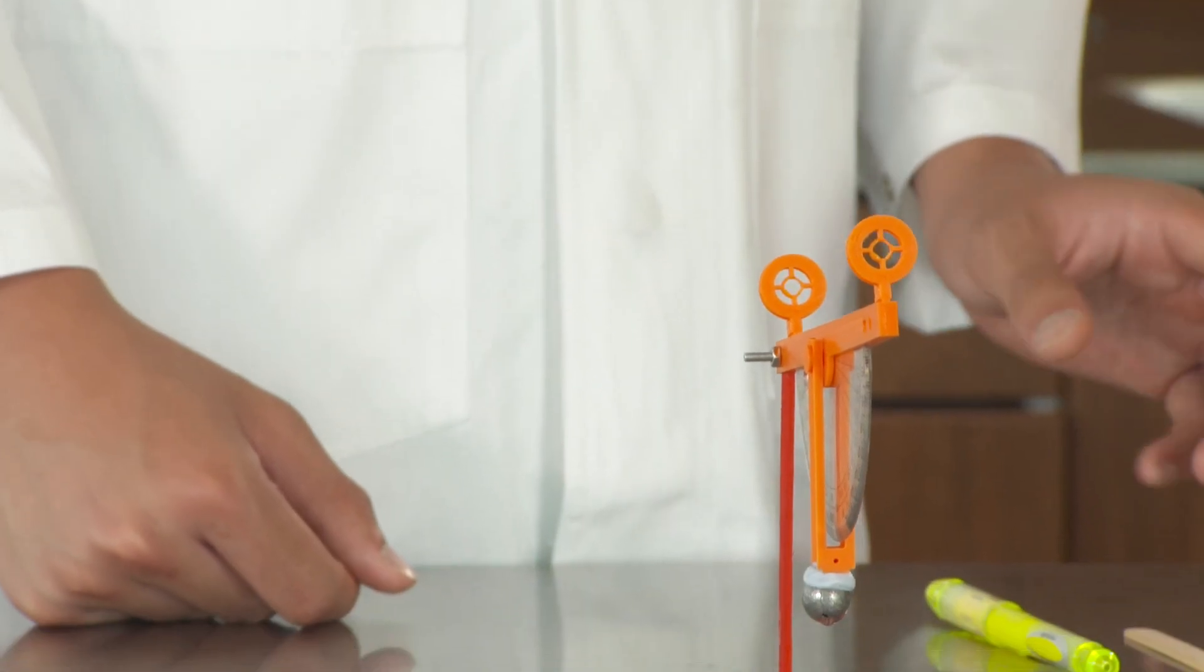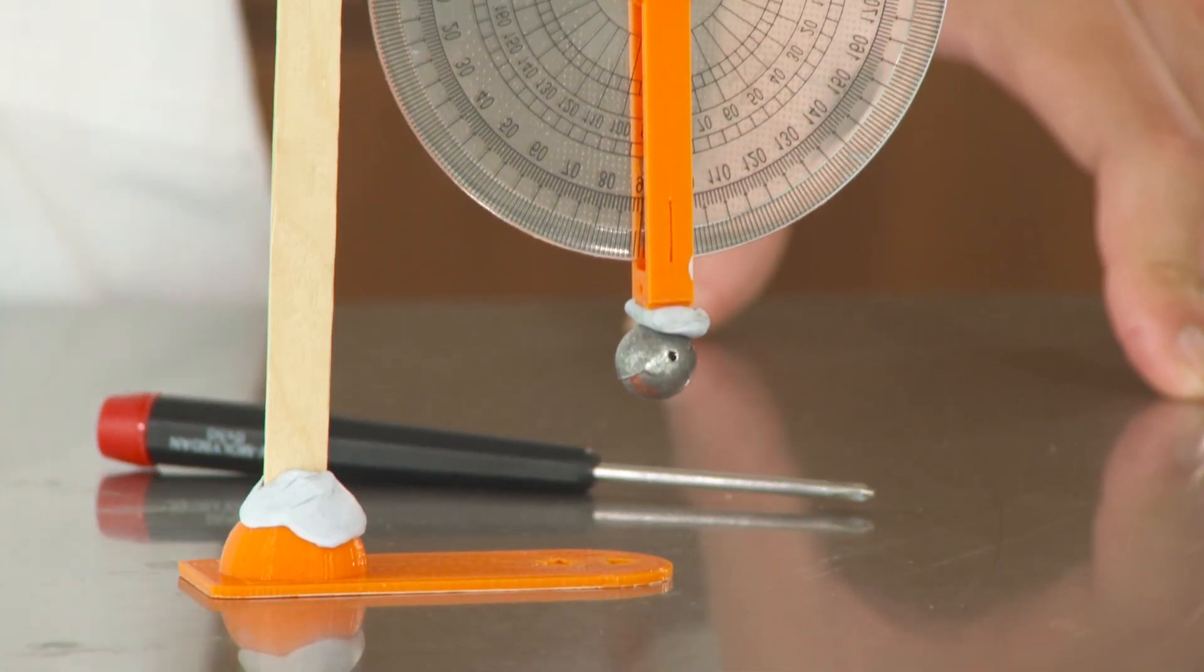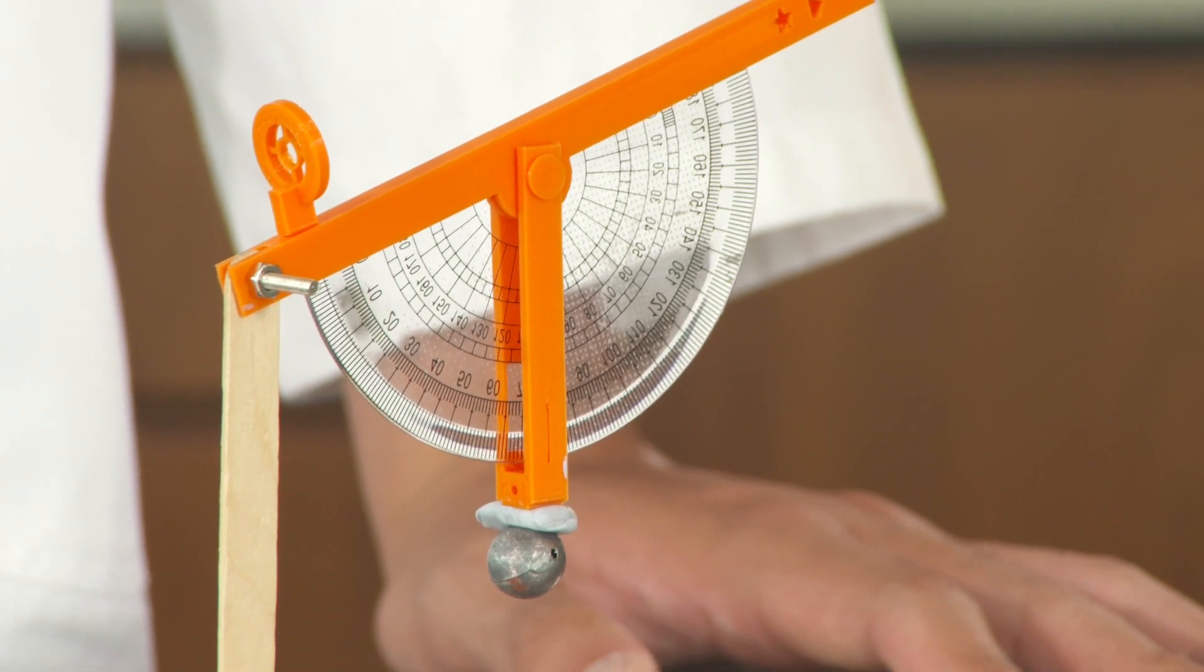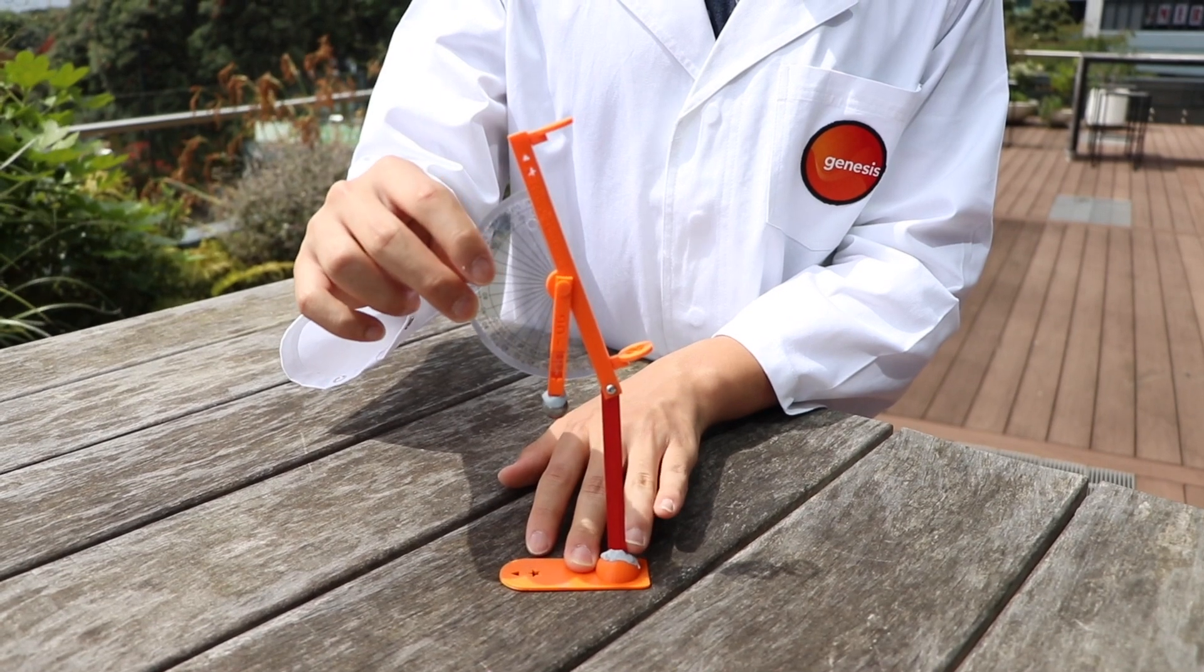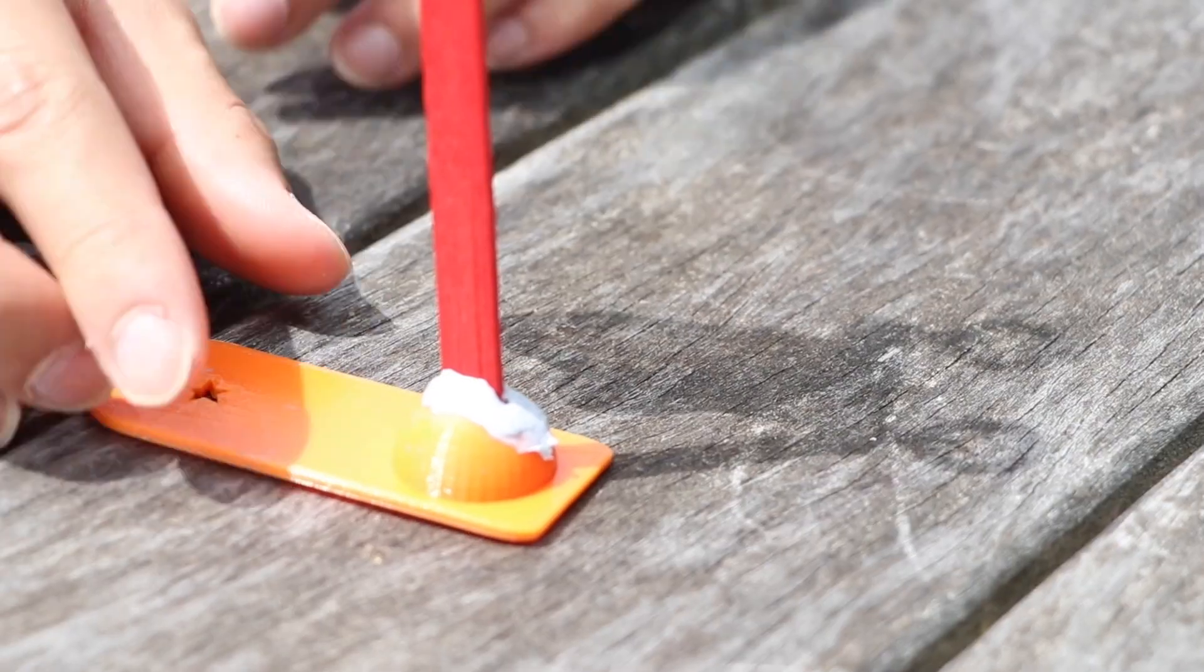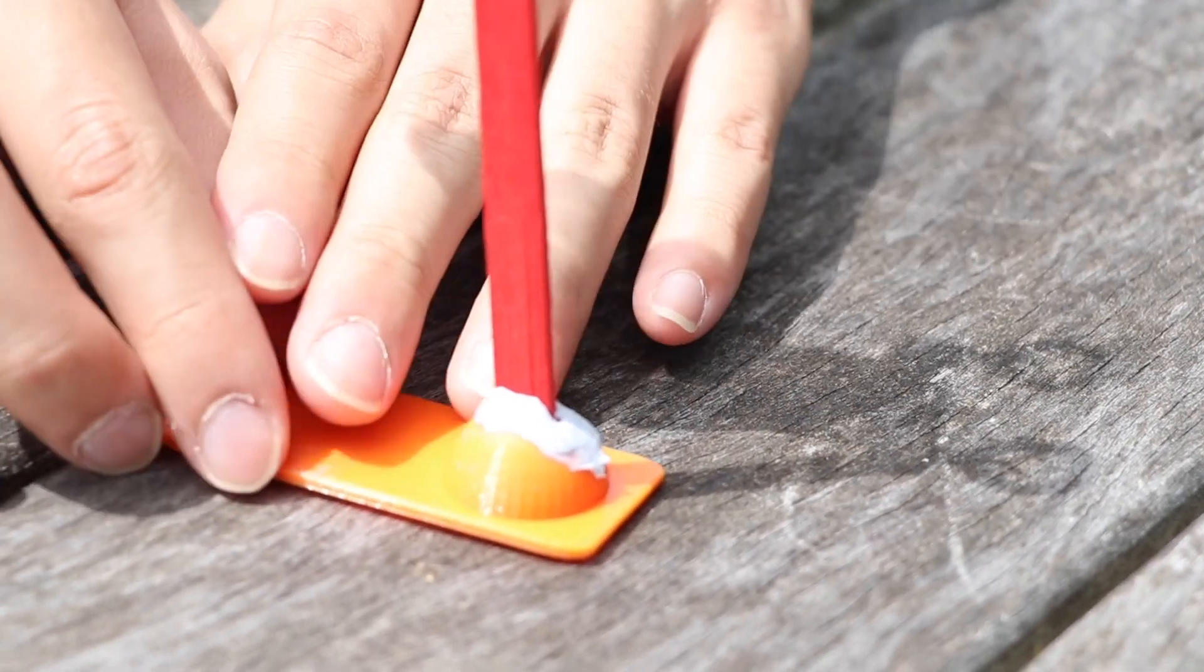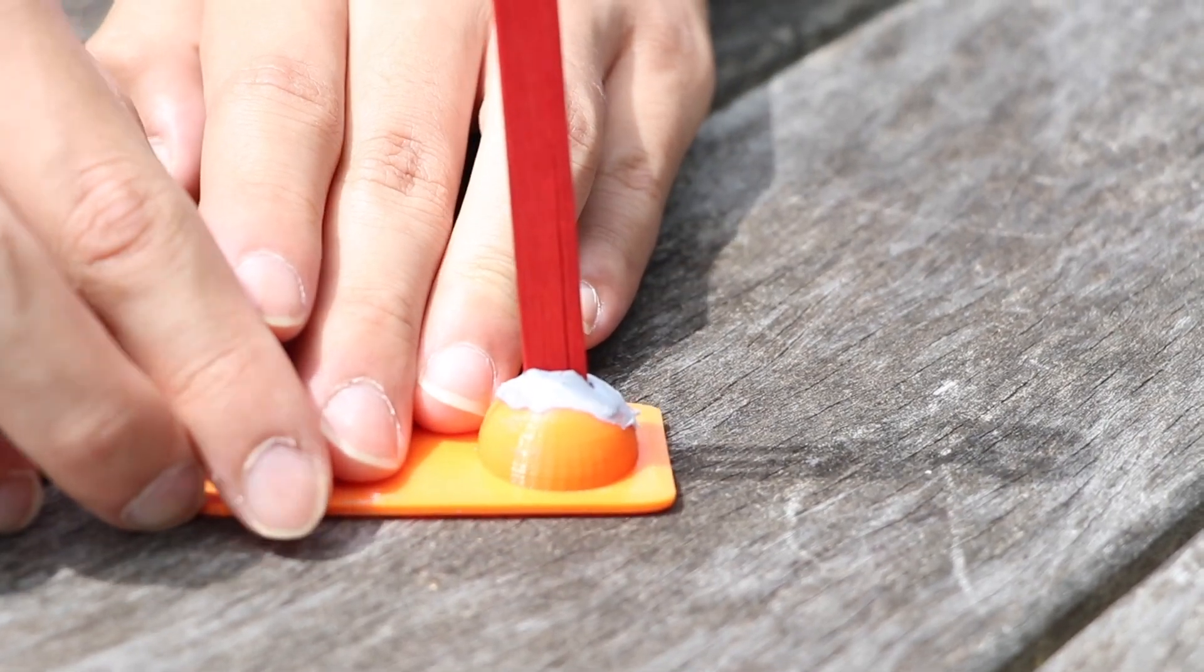Now once you've finished assembling the sun inclinometer, you can start using it. The first thing you do is find the sun and then you have to line it up with the sun. It's going to create two shadows. You have to align this until it becomes only one shadow. So now you have a fully functioning sun inclinometer.